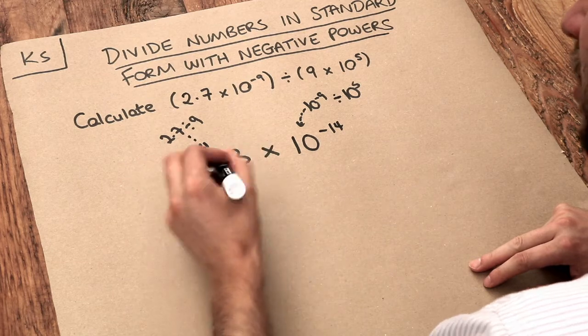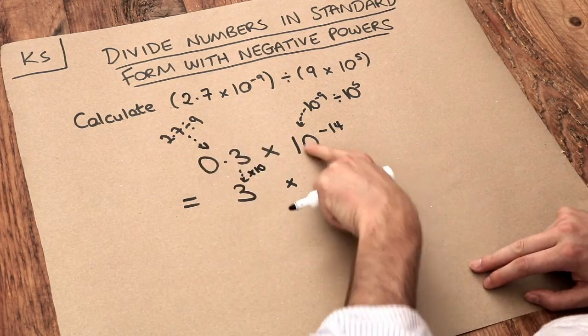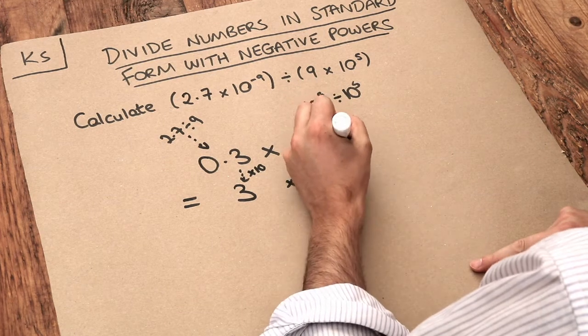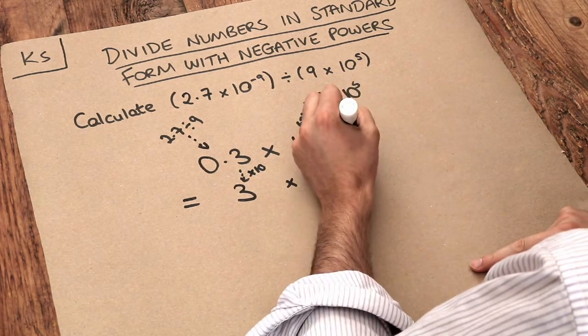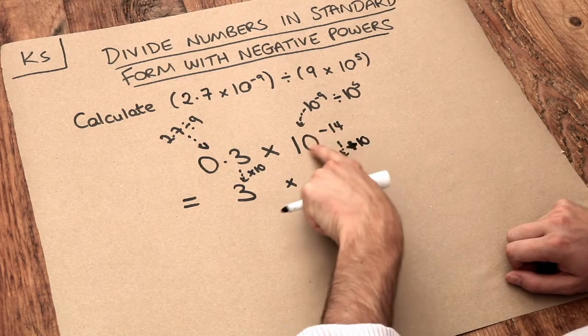Therefore we have to make this 10 times bigger, so it becomes 3. And therefore to compensate, this has to get 10 times smaller, so we end up with a number of the same value.